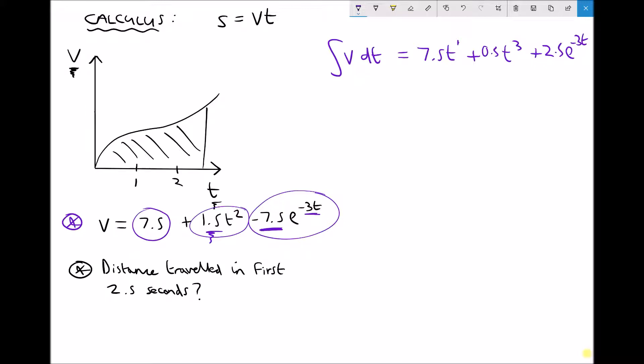If this was an indefinite integral, we would have to include a constant. But we have a definite integral. We want the distance travelled in the first 2.5 seconds. So our boundaries are when time equals 0 and time equals 2.5. And the way that we represent that and show that this is a definite integral rather than an indefinite integral is using square brackets and we need to add our boundaries on the outside of the second square bracket.